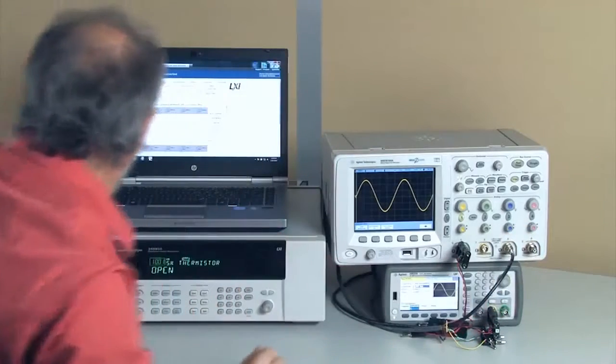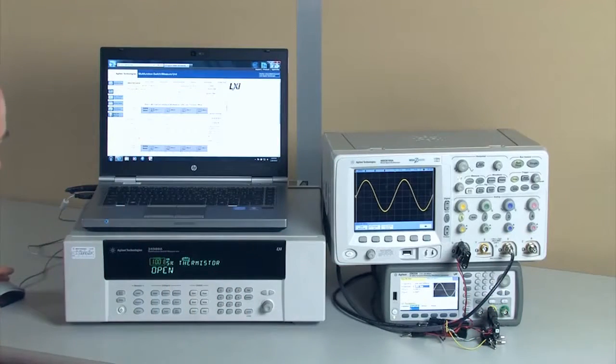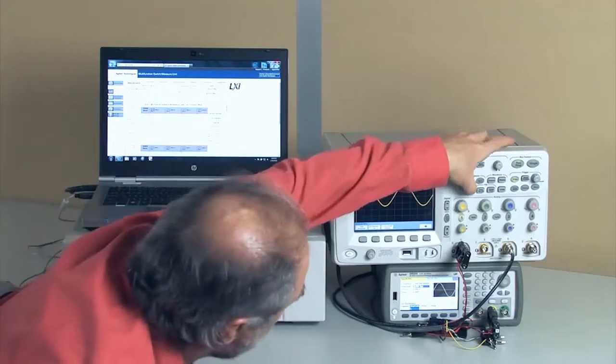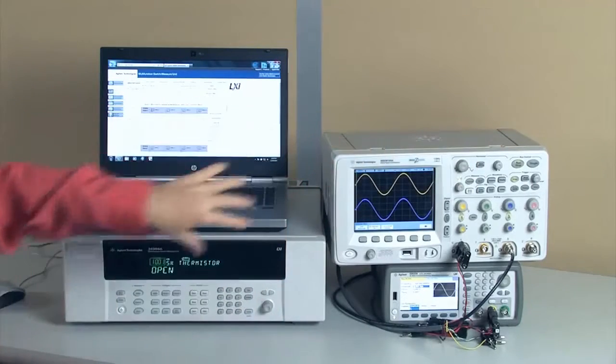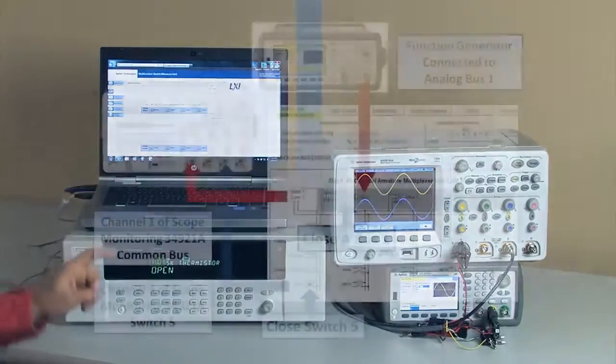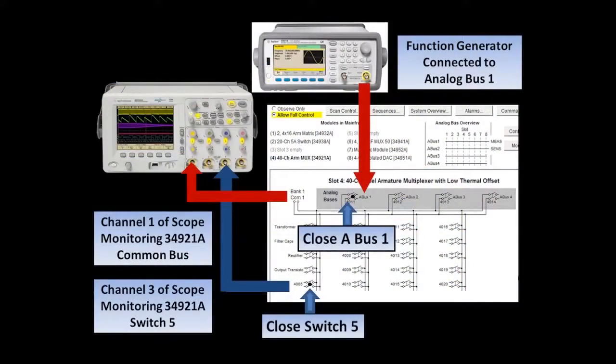Stick it in the oscilloscope, and now I'm going to close switch number 5. I'll do an auto scale. And now you can see we have the original sine wave that I put on the analog bus, and now you can see the signal that's coming through switch number 5.